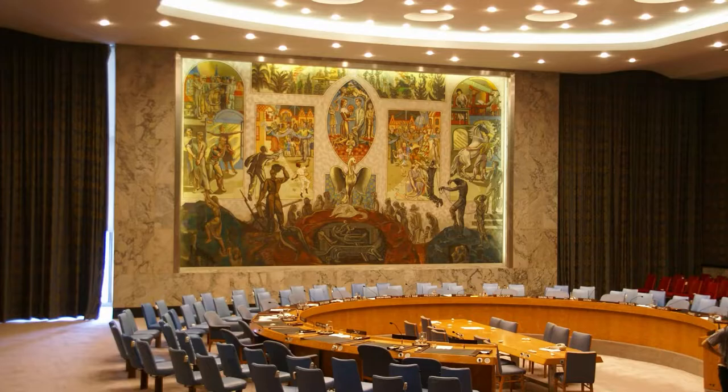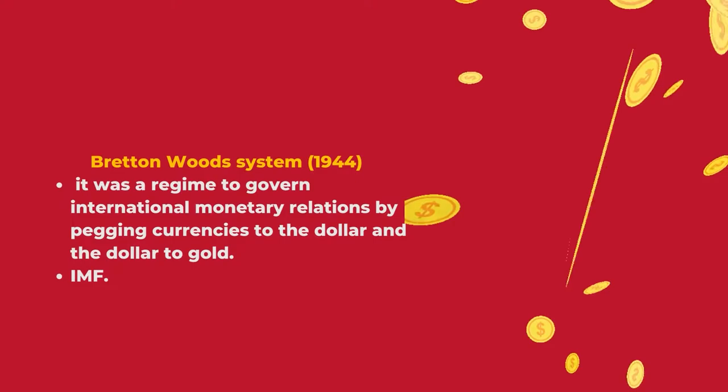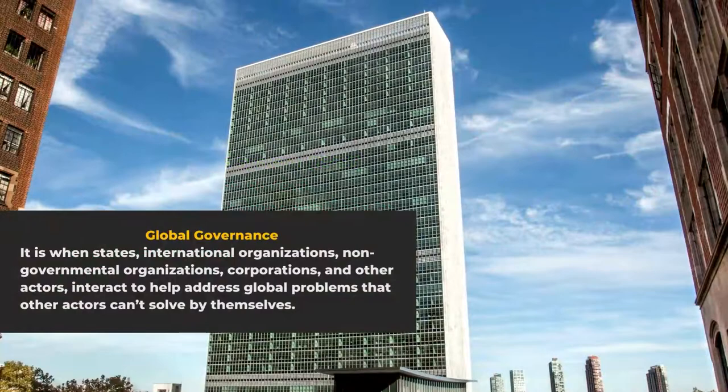For example, the Bretton Woods system was created in 1944 as a regime to govern international monetary relations by pegging currencies to the dollar and the dollar to gold. But it was fundamental to have an international organization such as the IMF.